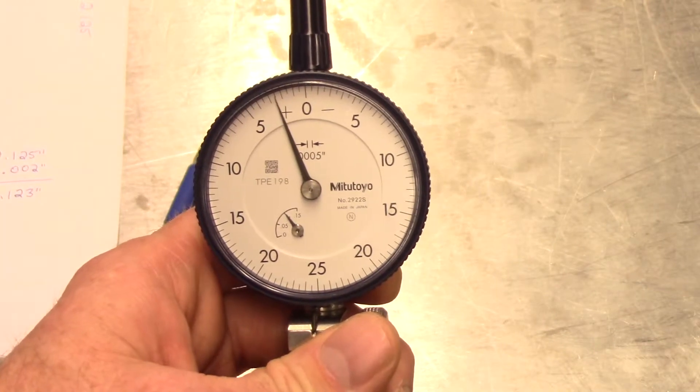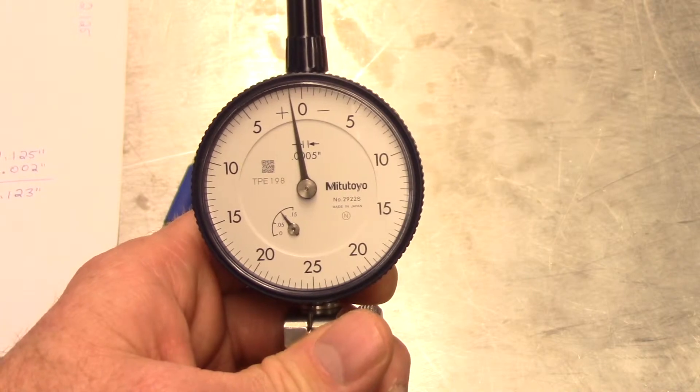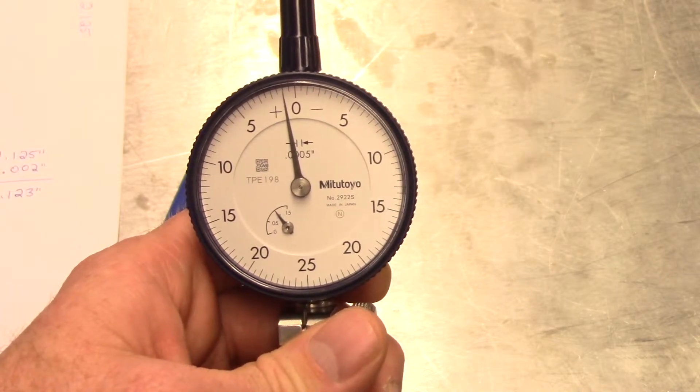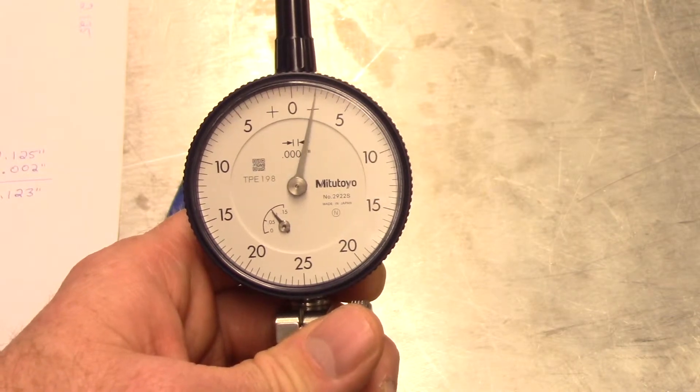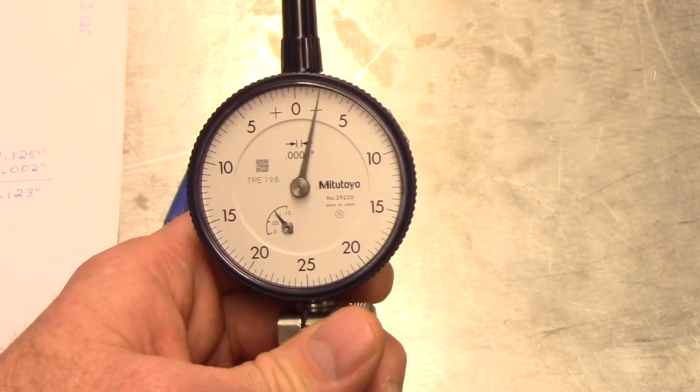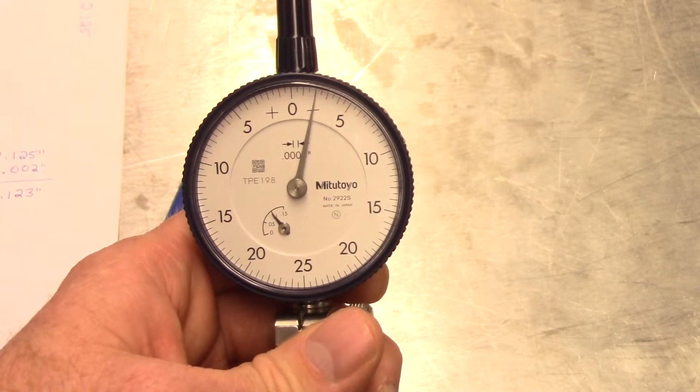Looking at the face of the gauge, you will notice there is a positive and a negative side to the increments. If our measurement is taken on the positive side of the zero, that tells us our bore is larger than the size we calibrated it to. Readings on the negative side of the gauge indicate that the bore is smaller than the calibrated size.